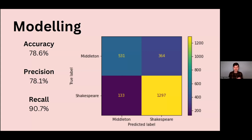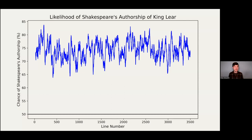For metrics — Shakespeare is the positive class. My model has an accuracy of 78.6%, a precision score of 78.1%, and a recall score of 90.7%. In essence, the model is a lot more likely to mistake a line written by Middleton as being written by Shakespeare than the reverse — keep that in mind when interpreting predictions. This is a graph of my model's predictions on King Lear — one of Shakespeare's plays in our training set. It shows the predicted likelihood that each line was written by Shakespeare, with a horizontal line at 50 percent.